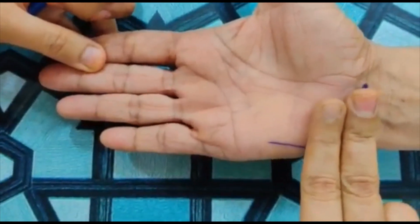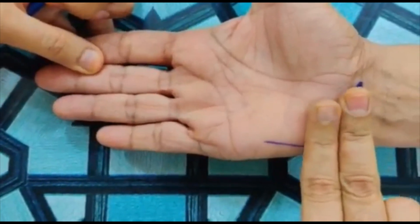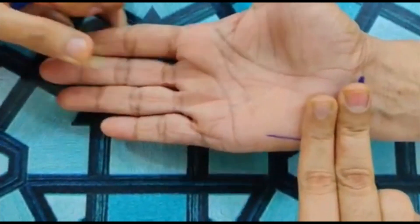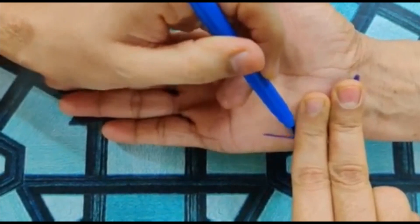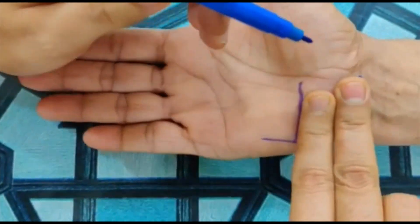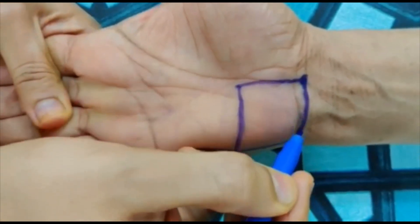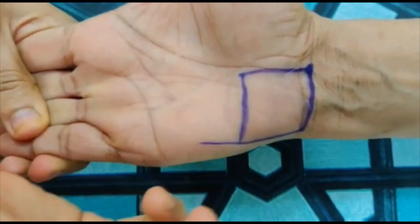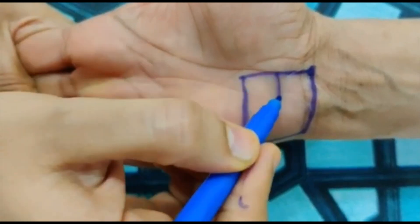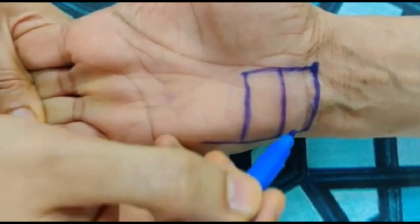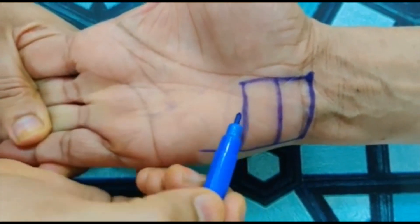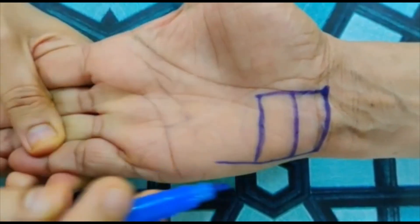And horizontally, we have to do like this. We have to connect the wrist with the dot. And here, we have to draw the line. This is our acidity part.